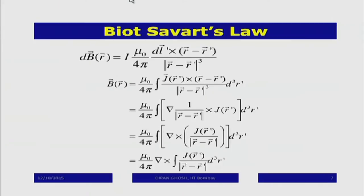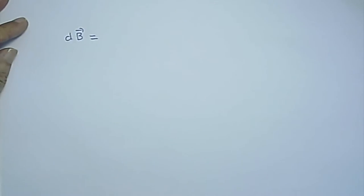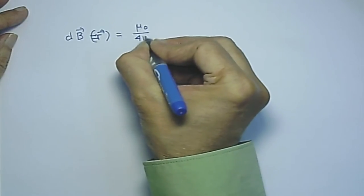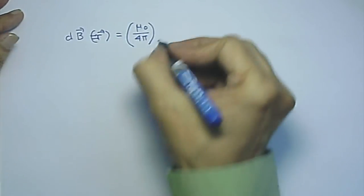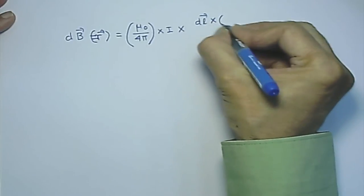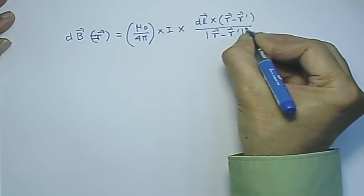Let me write it in a slightly different way. The differential value of B at position r is given by the constant mu_0/4pi — this constant, like 1/(4pi*epsilon_0), keeps coming back — times the current strength I, multiplied by dL×(r − r') divided by |r − r'|³. This is also in some sense an inverse square law. To get B I integrate: B = (mu_0/4pi) I × integral of [dL×(r−r')/|r−r'|³].